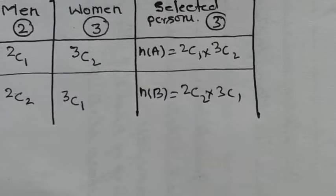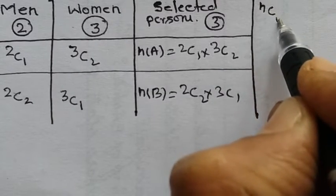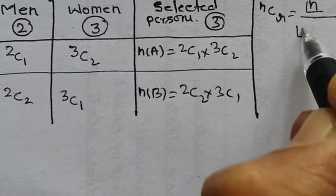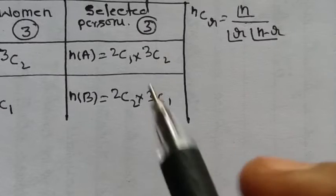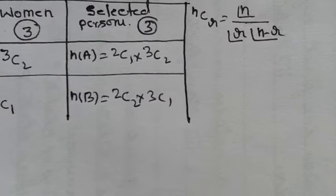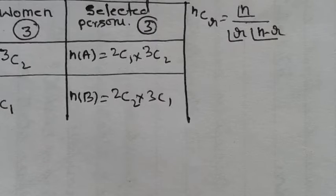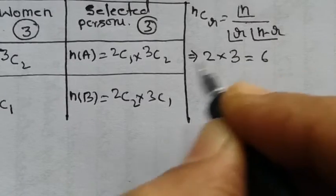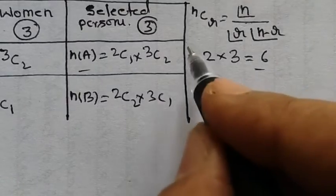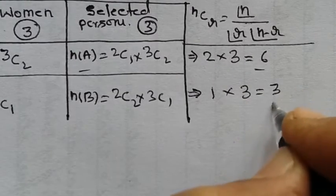For the second condition (event B): selecting two men and one woman. N(B) equals 2C2 multiplied by 3C1. Using the combination formula nCr = n! / (r! × (n−r)!), we get: 2C1 = 2, 3C2 = 3, so N(A) = 2 × 3 = 6. And 2C2 = 1, 3C1 = 3, so N(B) = 1 × 3 = 3.